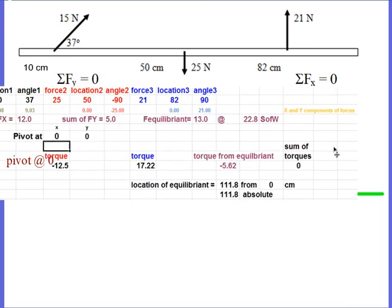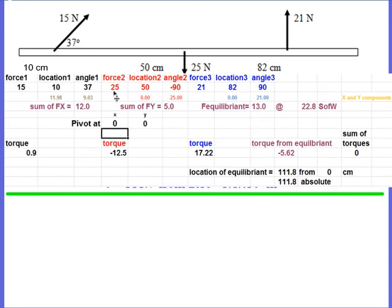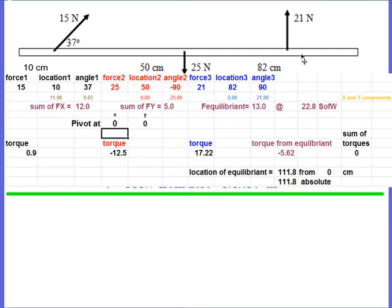I made a spreadsheet and put all of this information in. The spreadsheet was able to give me what the equilibrium force would be. I made the pivot be at zero — it's very important that this pivot also be on the rod, so the y-value of the pivot is zero. Looking at the torques from these four black forces, they add up to 5.62 coming out of the page, a positive torque. So the 13-newton force needs to give a torque of negative 5.62, requiring the force to be located at a distance of 111.8 centimeters from the pivot.